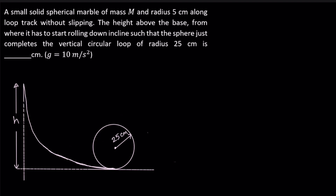As this marble rolls down, it starts from some point — let's call that location A. It comes down with some velocity and then moves around the circular track to complete the vertical circle. The height h here is the vertical distance between the centers of the marble at the starting position and at the bottommost location B.